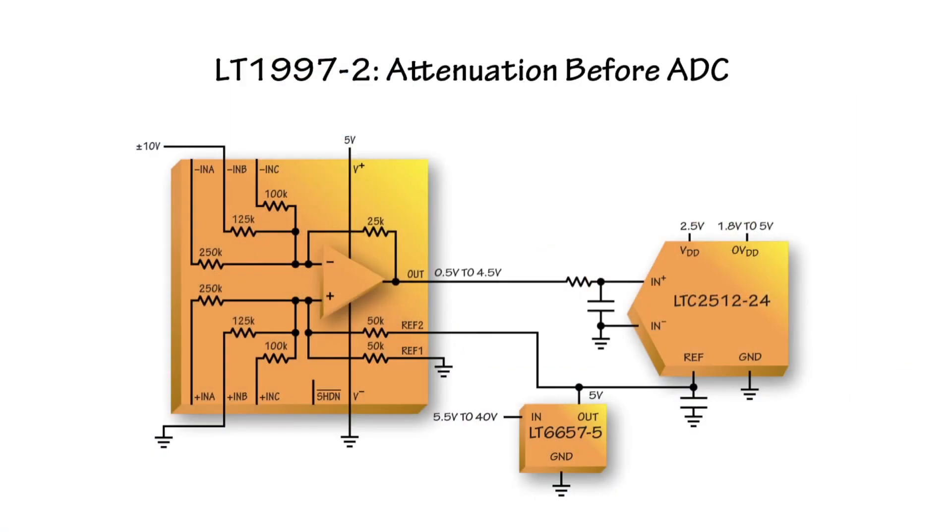The LT1997-2 is a version of this product that is set up for attenuation rather than gain. Depending on which pins you select, you can get attenuation of 0.1, 0.2, or 0.25.